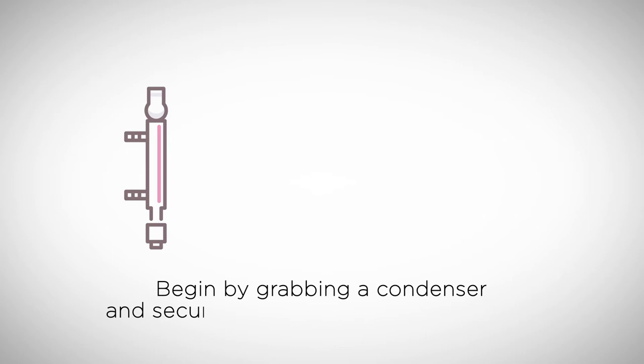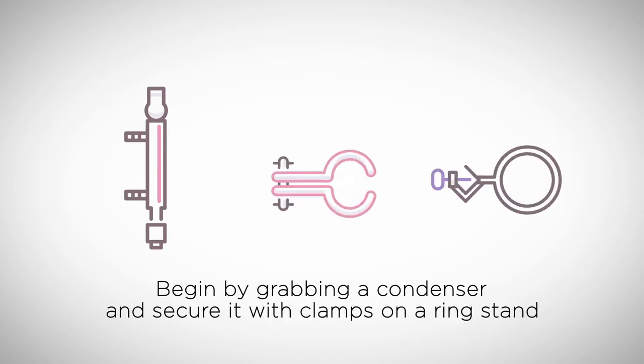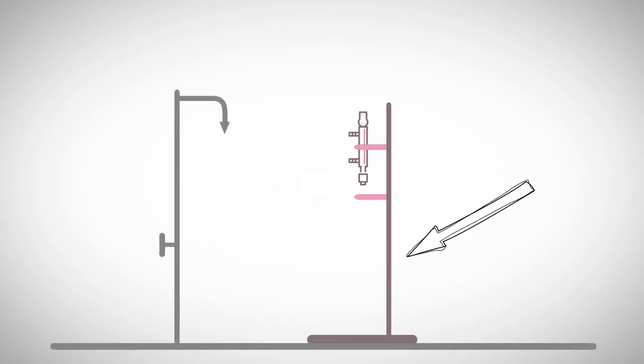Begin by grabbing a condenser and secure it with clamps on a ring stand. Make sure the clamps are high enough to allow space for jack and heating mantle underneath. This will allow for easy removal of heat source if needed.